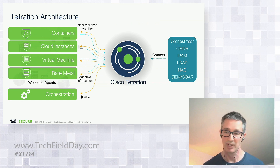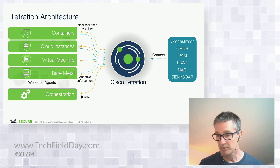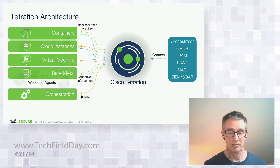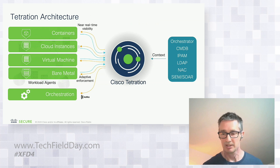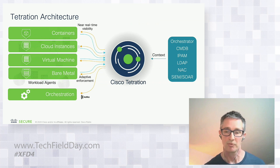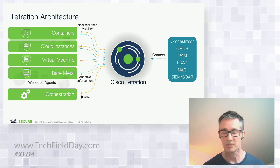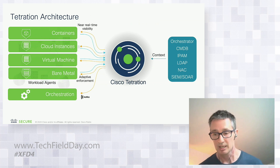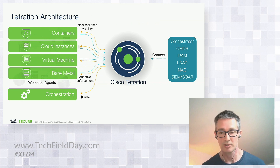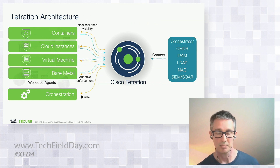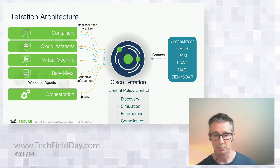IPAM systems have valuable data — things like the locations of various subnets. User and endpoint identity and other context can come from authentication systems and network access control. We also have the ability to bring in context from other security systems in the environment. We'll see examples of the kinds of policies that can be built and how we can leverage each of these to facilitate policy that maintains its dynamic nature going forward.